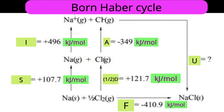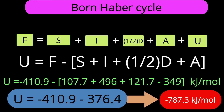Since we do not know only that one term — lattice energy — we can find it by simple algebraic calculation. Applying Hess's rule: the enthalpy of formation F equals the sum of all indirect steps. The direct process gives us F, while the indirect process gives us sublimation S, ionization I, half-dissociation ½D, electron affinity A, and lattice energy U.